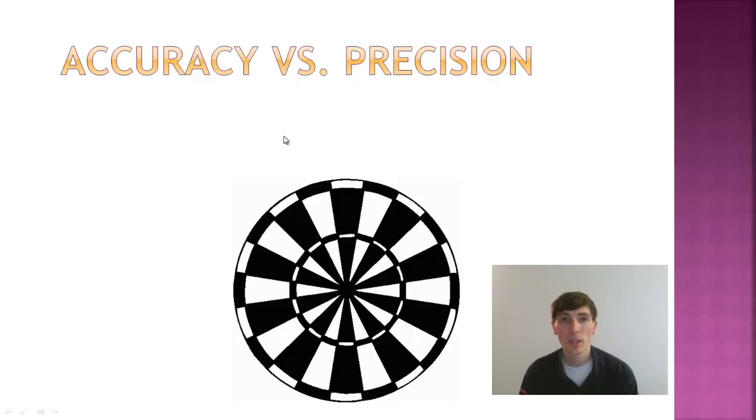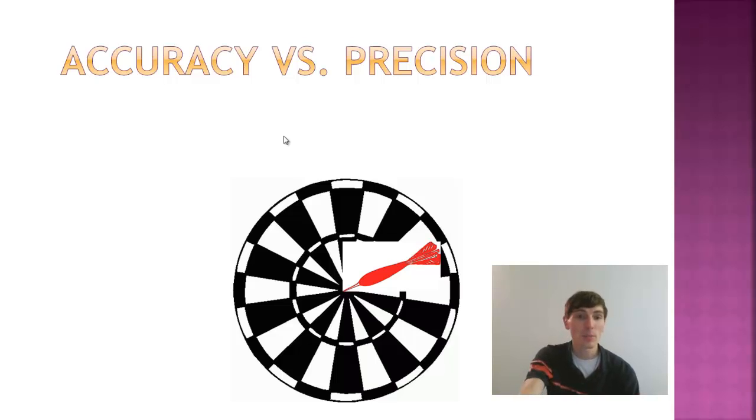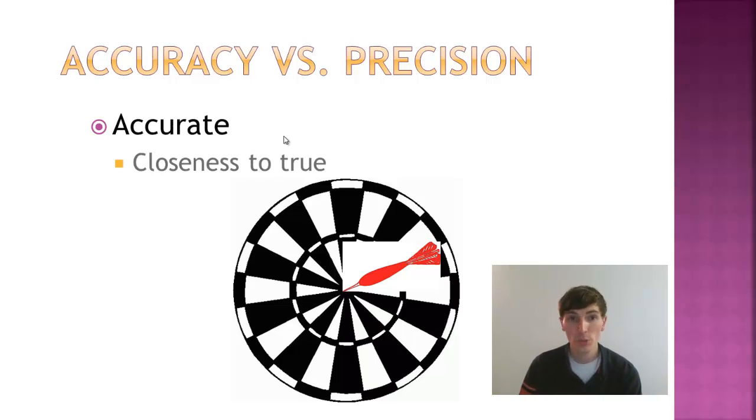So the first thing we're going to do is talk about accuracy versus precision. Now, a lot of times in everyday language, these words are actually used interchangeably, but it turns out that they don't mean the exact same thing. Using a dartboard has been one of the best ways to kind of see this difference made really clear and understandable. So we're going to start with accuracy. What do I mean by being accurate? Most of you would probably say that you were going to hit the bullseye, and you'd be right. Accuracy means closeness to the true value.